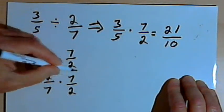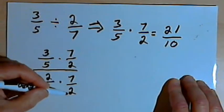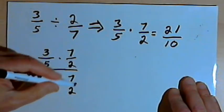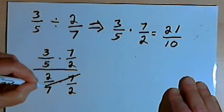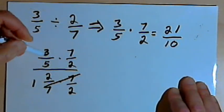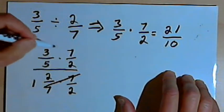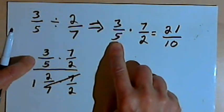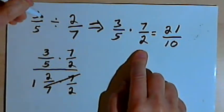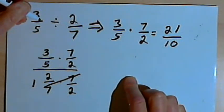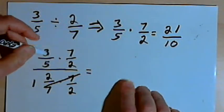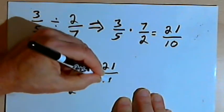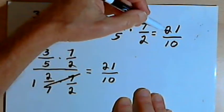Now if we look at the denominator, that's 2 over 7 times 7 over 2. If I multiply that out, I'm going to get 14 over 14, so this whole denominator is just 1. Any number divided by 1 is just the number itself, so really all I'm left with is the numerator. The numerator I've got now is 3 over 5 times 7 over 2, which is exactly what I got with my original division problem when I turned it into multiplication. Completing the problem: 3 times 7 is 21, and 5 times 2 is 10, so I get 21 over 10 — the same fraction as before.